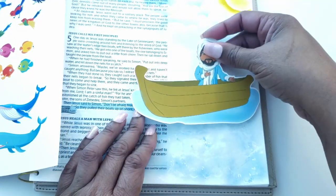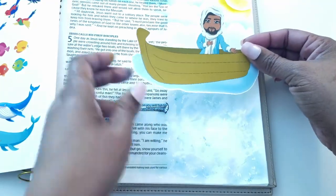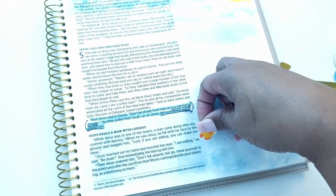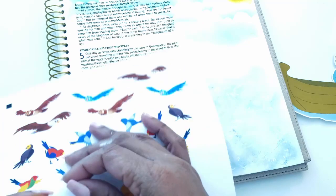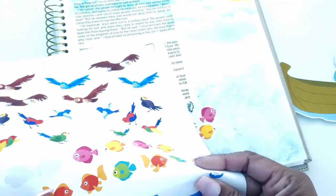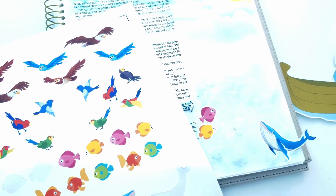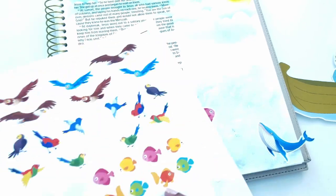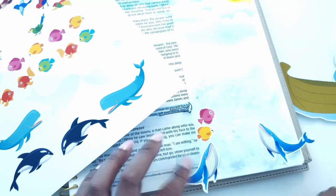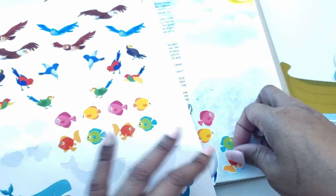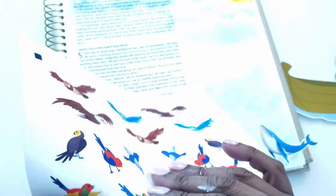When they had done so, they caught such a large number of fish that their nets began to break. So they signaled their partners in the other boat to come and help them, and they came and filled both boats so full that they began to sink. When Simon Peter saw this, he fell at Jesus's knees and said, go away from me Lord, I am a sinful man. For he and all his companions were astonished at the catch of fish they had taken, and so were James and John, the sons of Zebedee, Simon's partners. Then Jesus said to Simon, don't be afraid, from now on you will fish for people.